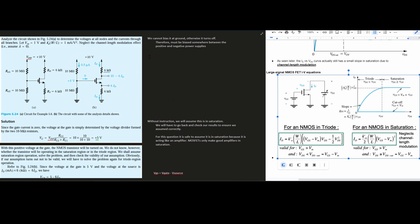In the previous problem, we bound it to ground, but this one, we're not going to bias it to the ground, because if we bias this to the ground, it's going to turn off. Therefore, we must be biased somewhere else between the positive and our negative power supplies.